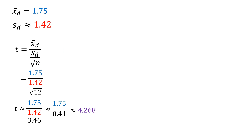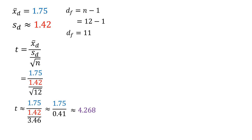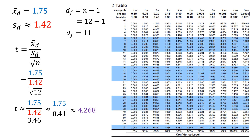The test statistic is 4.268. The next step is to find the t-critical value using the t-table, which requires the degrees of freedom. For the paired samples t-test, degrees of freedom equals n minus 1. Since n is 12 — there are 12 respondents or 12 pairs of data — the degrees of freedom is 12 minus 1, which equals 11.